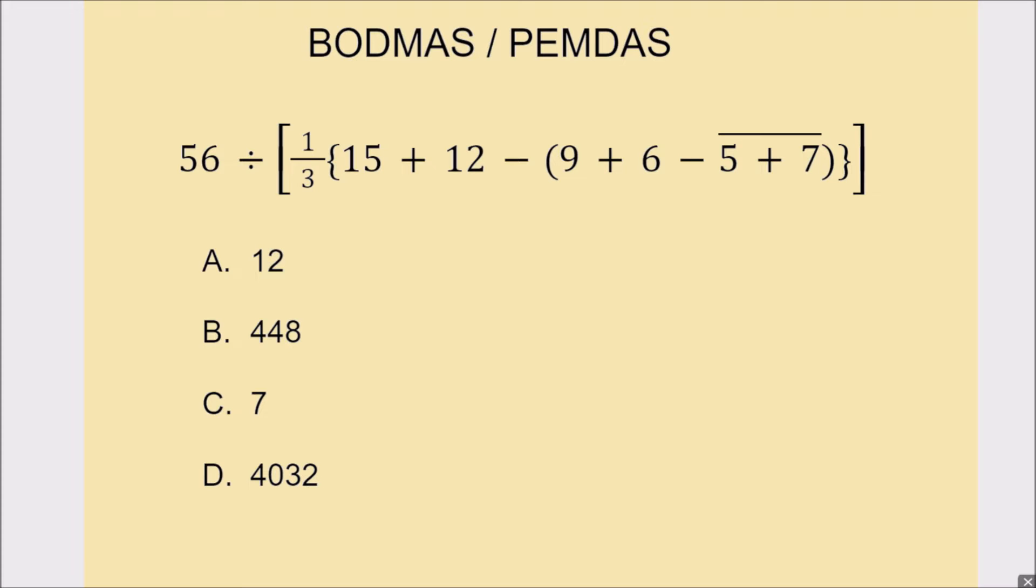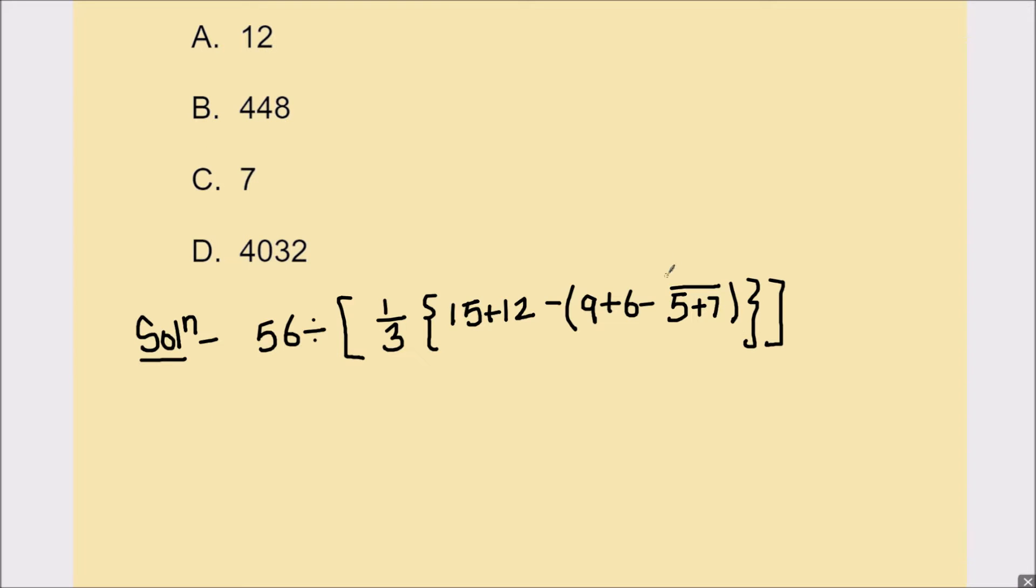Hello students, in this video we are going to learn how to solve this question by BODMAS or PEMDAS rule. We have given four options, so let's start and find the right option to this expression. Here we see that 5 plus 7 is written under this bar. This bar means that these two numbers go together. Whatever the operation is between the two numbers, the operation we need to do first with both the numbers together.